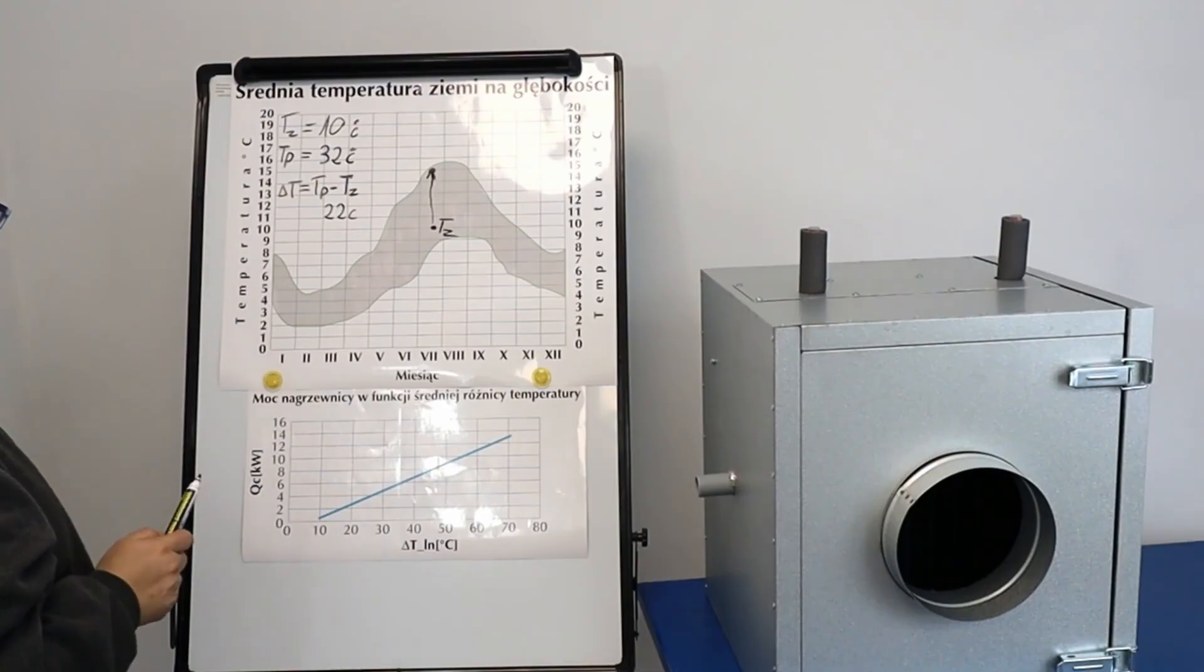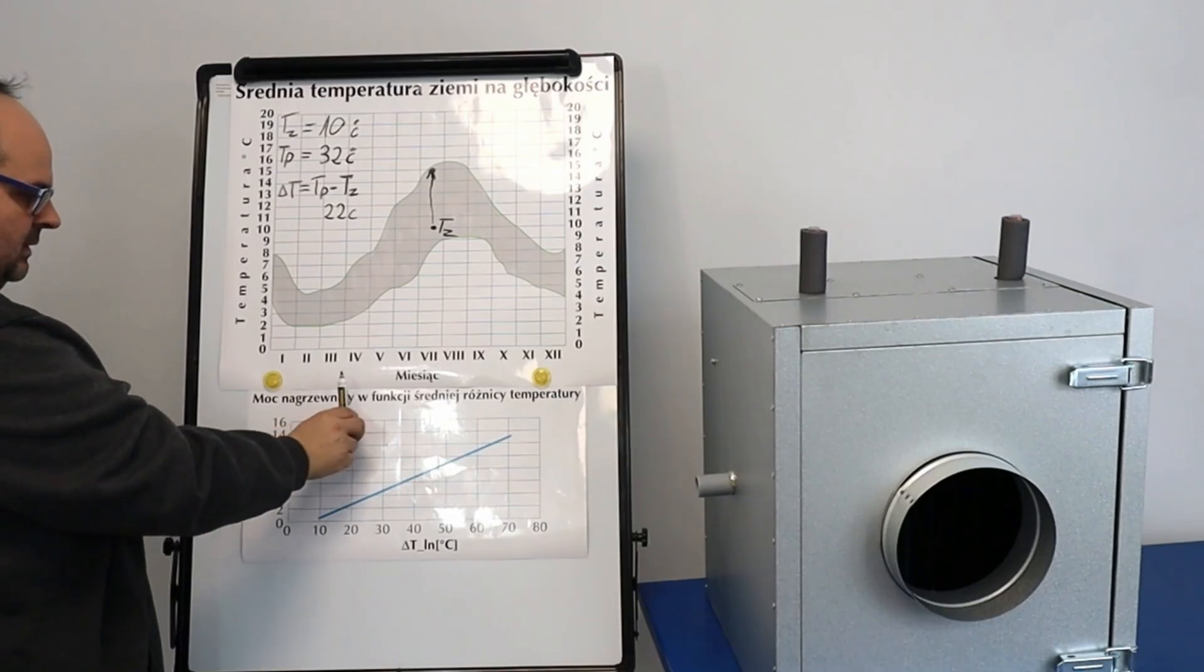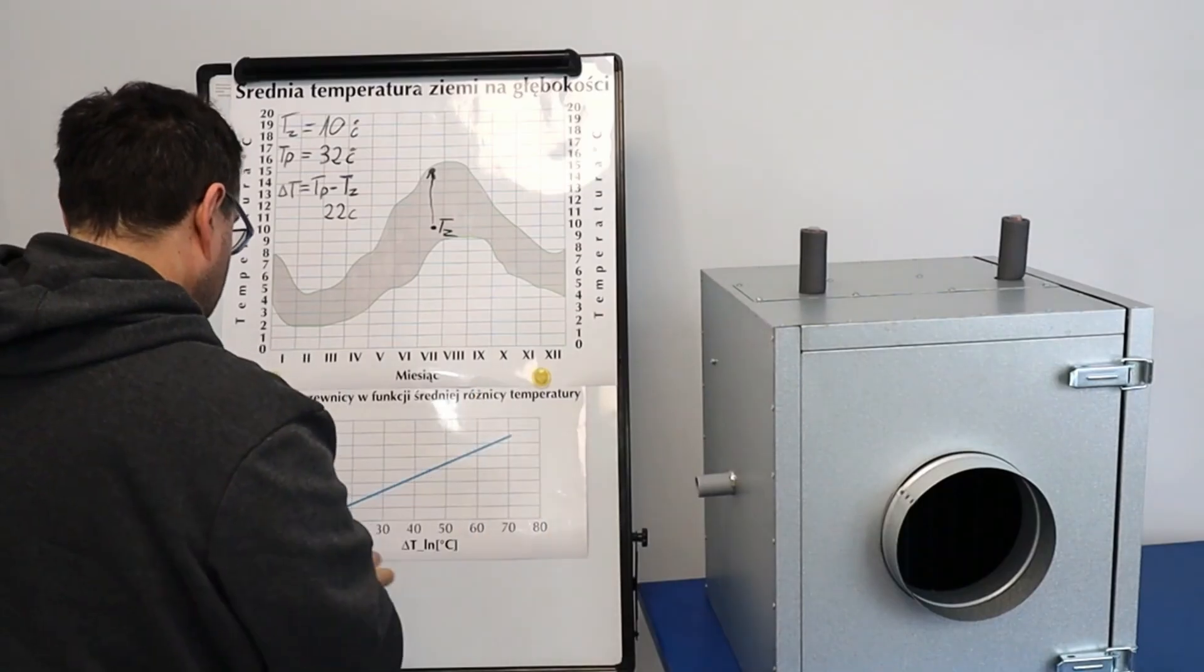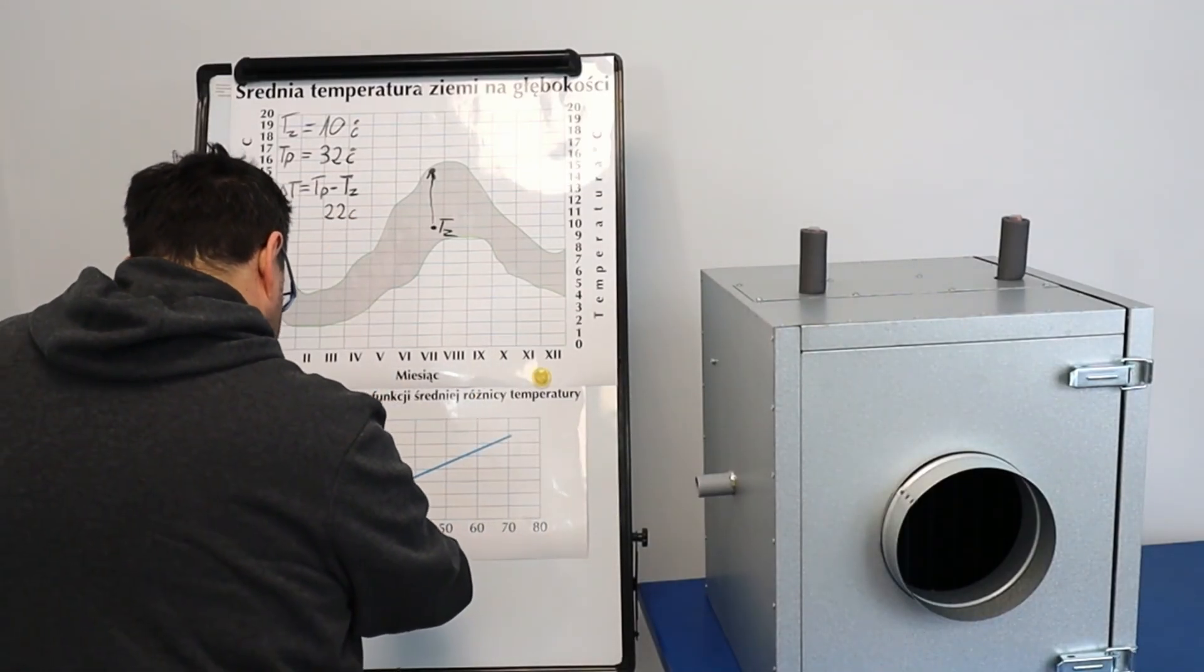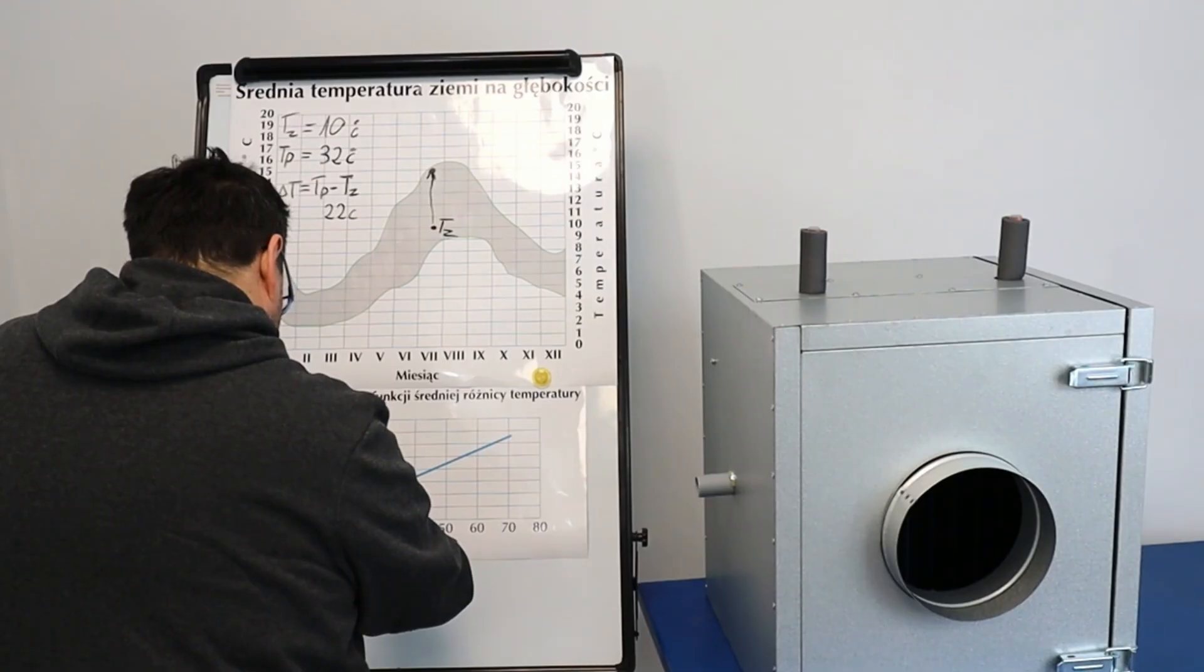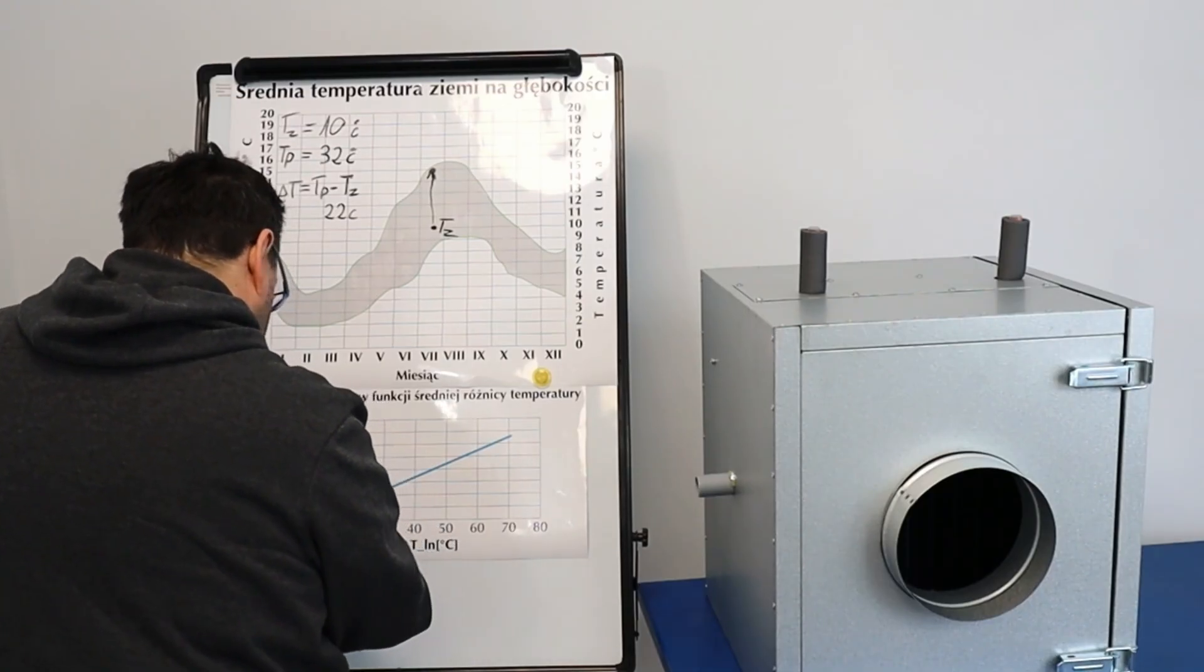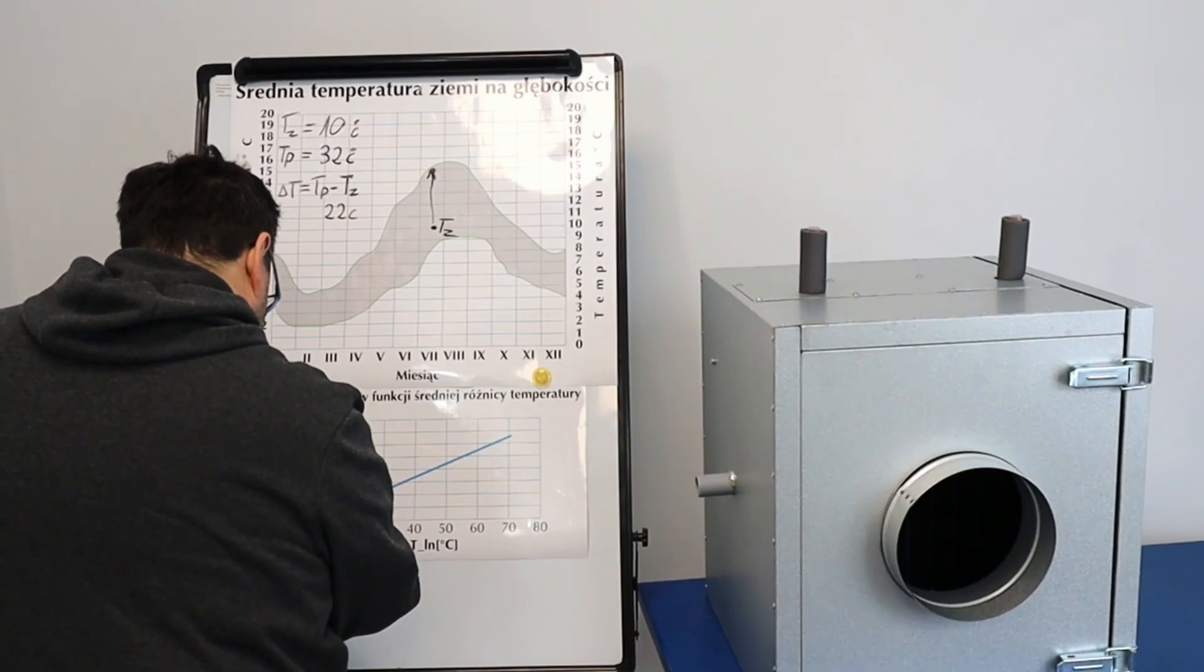So now look. We go to our chart. This is heater power as a function of the average temperature difference. This is the power of this device. And it's 22 degrees. We have 22 degrees here. We're moving. And here you have power somewhere around 3 kilowatts.